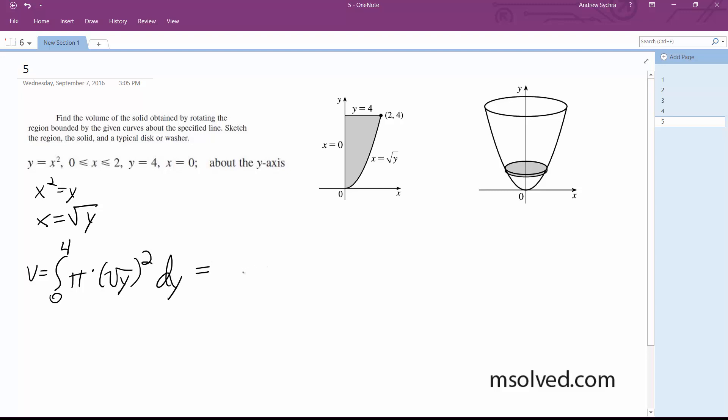So after integrating this, we have pi times quantity one half, y squared, from 0 to 4.